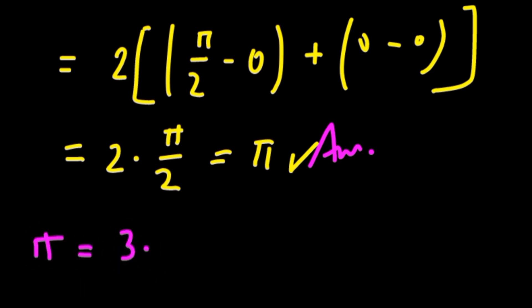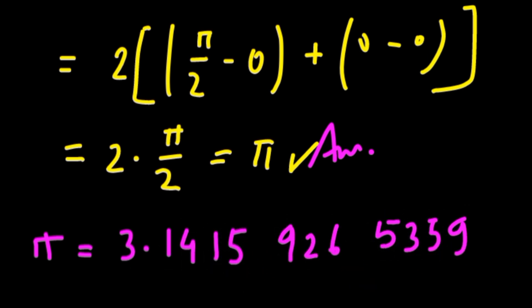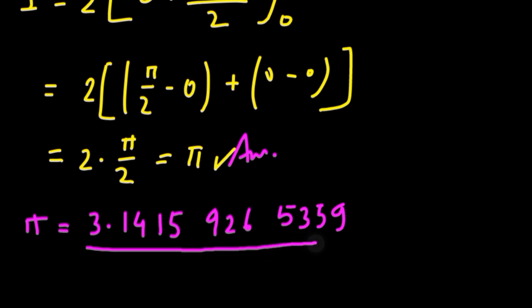Pi equals 3.1415, then 9, 2, 6, and then 5, 3, 5, 9, and it just goes on. Neglecting the decimal point, 3 1 4 1 5 9 2 6 5 3 is the Wi-Fi password. Congratulations, you have now got the password and can enjoy the free Wi-Fi!